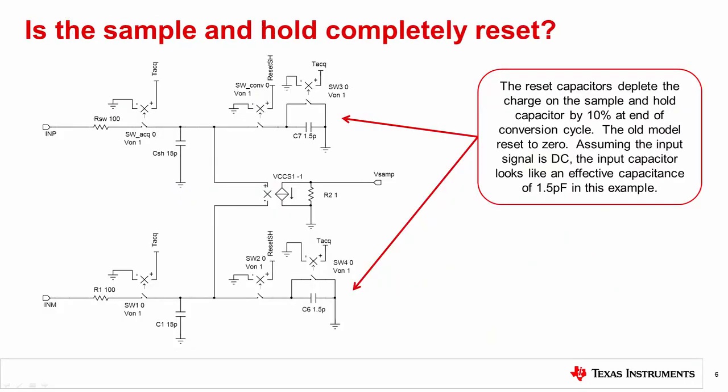Up to this point, all the material we have presented on SAR ADC modeling has assumed that the sample and hold capacitor is completely reset at the end of each conversion. In most practical SAR ADCs, this is not true. In fact, at the end of the conversion cycle, some amount of charge will be depleted on the sample and hold capacitor, but it will generally not be fully discharged. This means that the actual settling is typically better than predicted by the model we have been using. The model shown here illustrates a case where the sample and hold charge is depleted by 10% at the end of each conversion cycle.